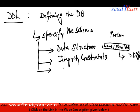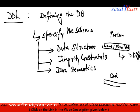DDL also helps me provide data semantics. Data semantics is basically how the different data concepts are related to each other. For example, we have a person and a car concept, where the car can have data structures like model, year, and car number. The data semantics part tells me how the person entity is related to the car entity.